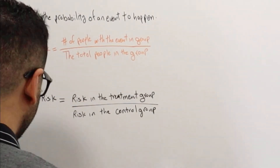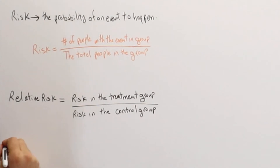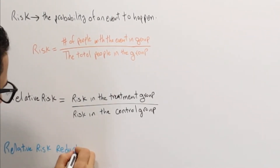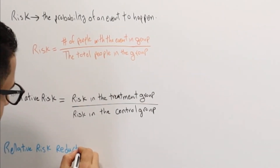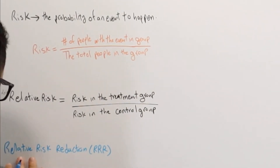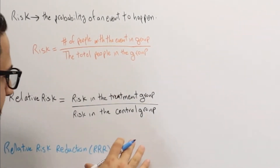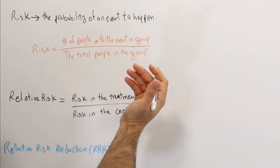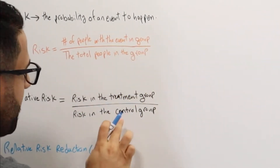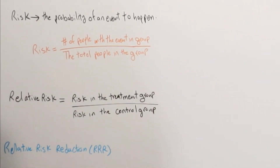For this lecture I'm going to go over relative risk reduction, also referred to as RRR. We're basically trying to see how likely the treatment group is reducing the risk of the event in comparison to the control group.